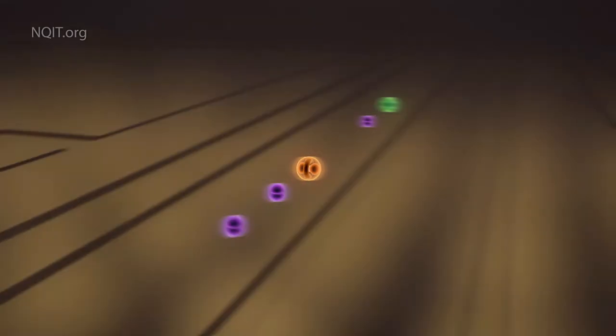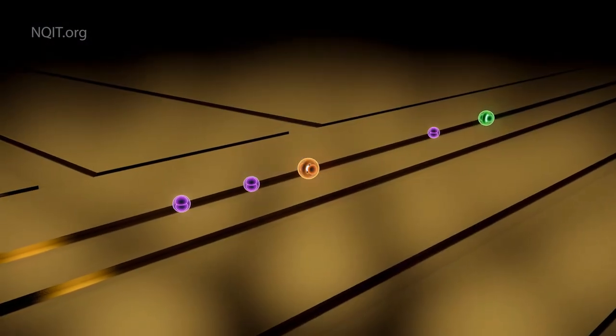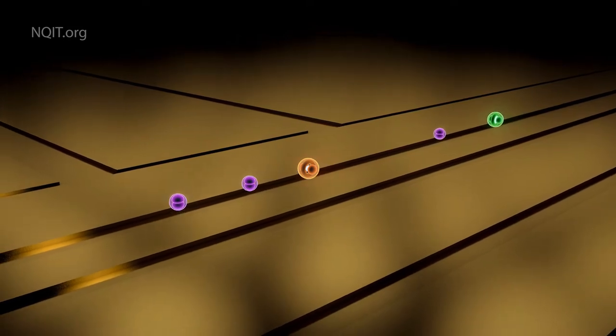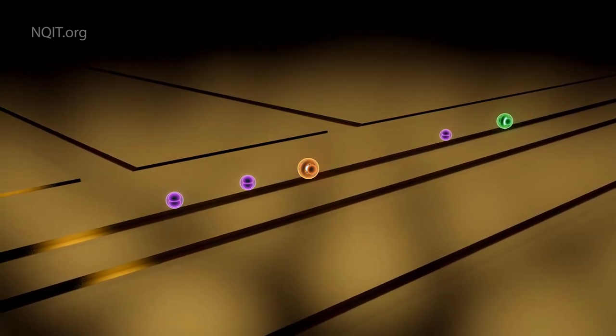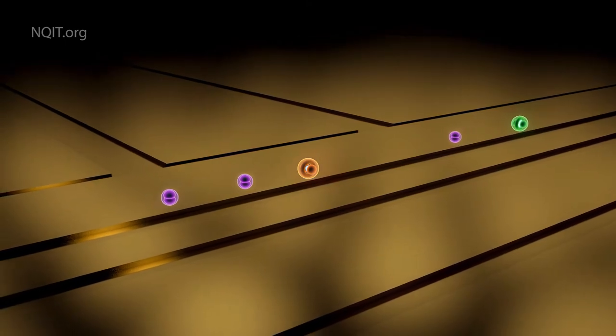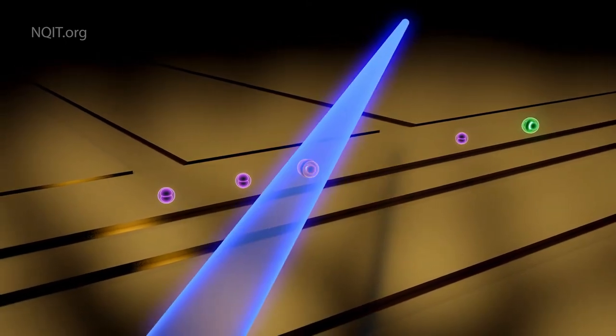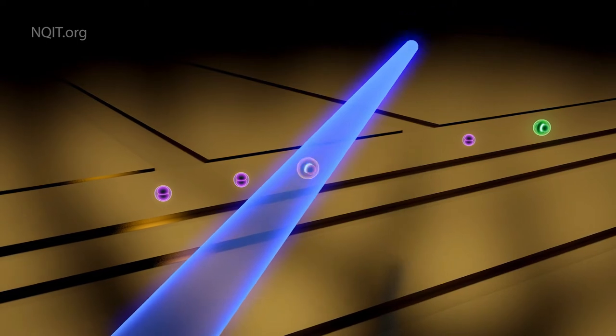Let's zoom out. We see gold strips below. These produce electric fields holding our ions still without physically touching them and again we see a laser causing an ion to become excited and emit its photon.